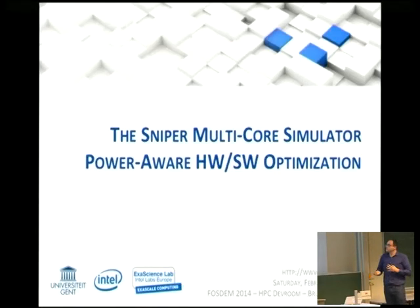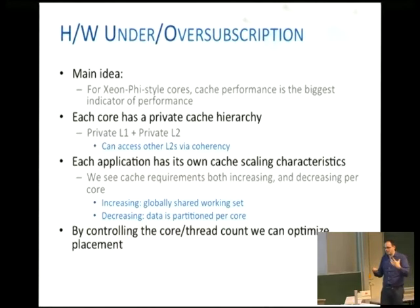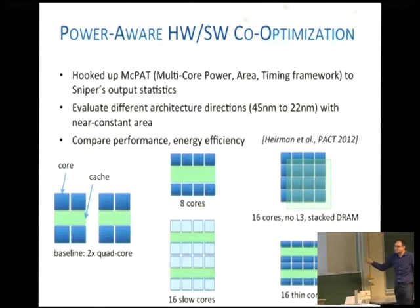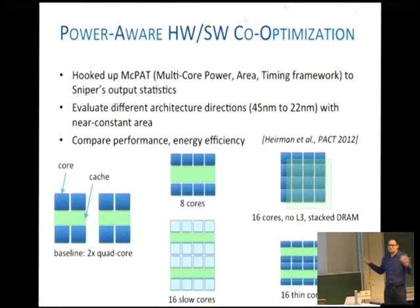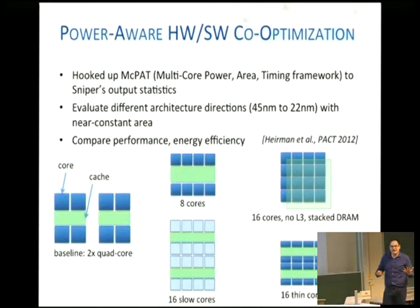I want to touch on some of our research in hardware-software optimization. The main idea is: if you have Xeon Phi-style cores, for example, is there a way to do hardware-software optimization to achieve better performance? You've got lots of options — small cores, stacked RAM, big cores, Xeon Phi, GPUs. There's a large variety today and it's getting even more complicated to understand. We use Sniper to understand this complexity and determine the right solution.